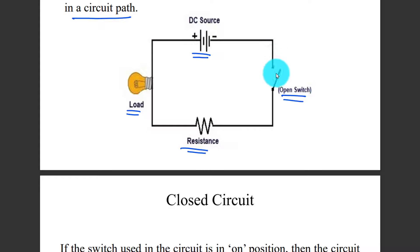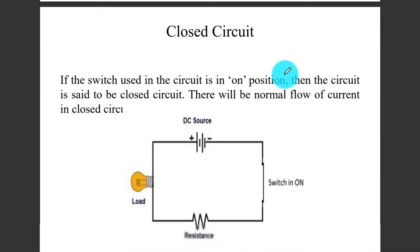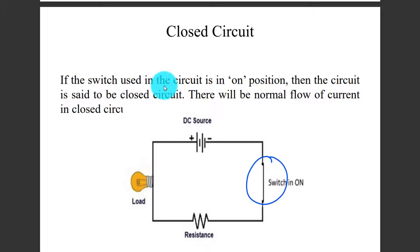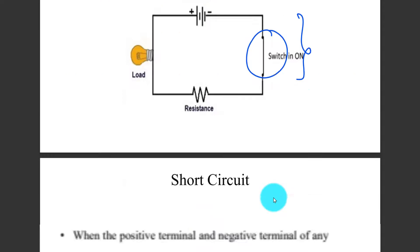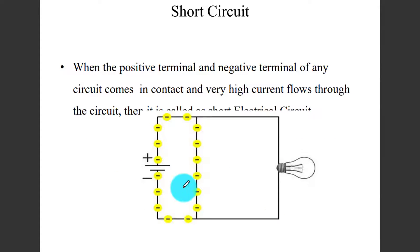When the switch is on, current can pass. If the switch used in the circuit is in the on position, then the circuit is said to be a closed circuit. There will be normal flow of current.